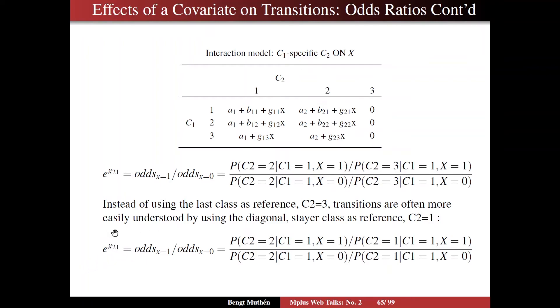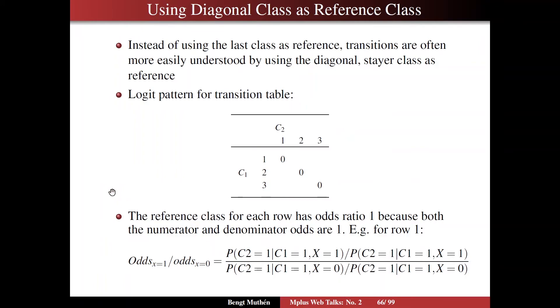So that's, instead, C2 equals 2, given C1 equals 1, divided by C2 equals 1 here, instead of 3 up there, in both the numerator and the denominator. So instead of using the last class as reference, transitions are often more easily understood by using the diagonal.